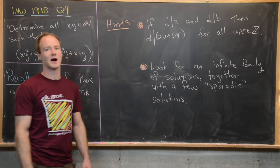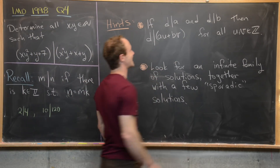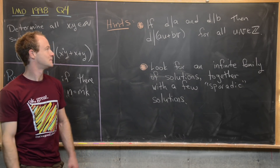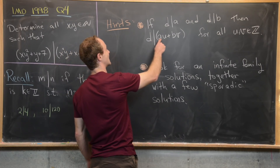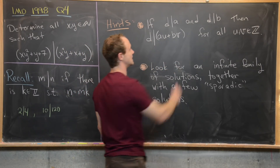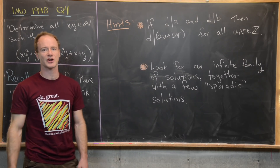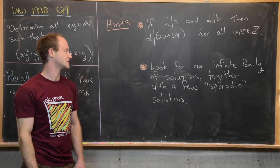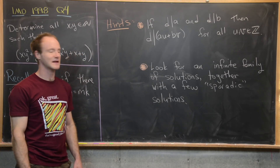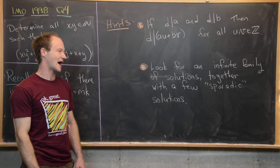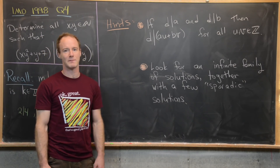Before we look at a solution, I want to give a couple of hints. My first hint is that if d divides a and d divides b, then d divides any linear combination of a and b — that is, d divides a·u + b·v for all integers u and v. This is a pretty common trick for these types of divisibility questions. My next hint is that you should be looking for an infinite family of solutions together with a few sporadic solutions.